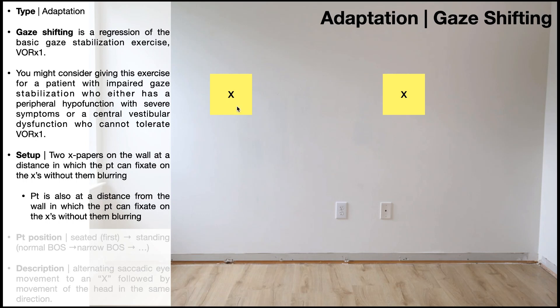The basic setup here is we've got two X papers on the wall. Each X paper is just a post-it note with an X drawn on the center, where the X is about half the length of your thumbnail. The X papers are at a distance apart from one another in which the patient can still fixate on each X without the X blurring. So if the patient looks at this X, it doesn't blur, it doesn't move. They can look at this X, it doesn't blur, it doesn't move.